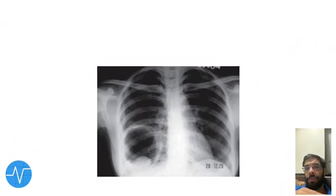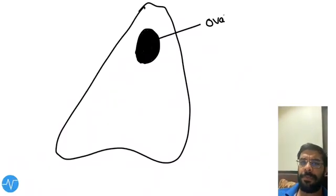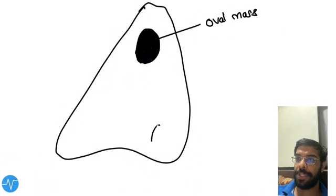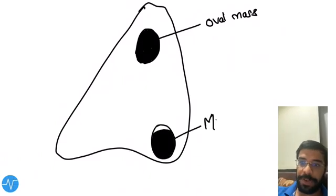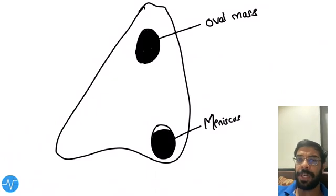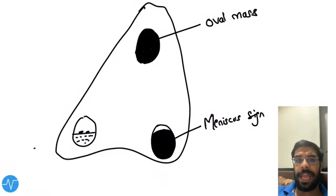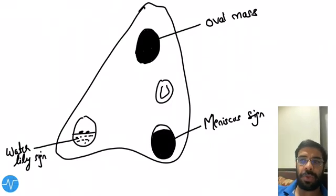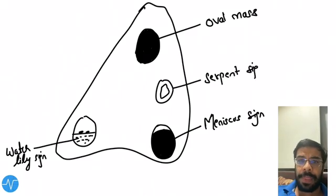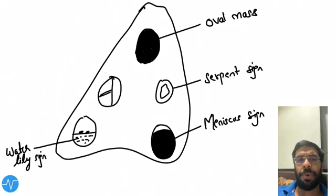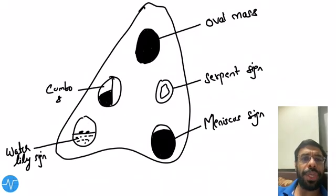In summary: unruptured hydatid cyst is homogeneous, oval, well-defined with no calcification. For ruptured cysts: Minister sign when pericyst ruptures; Water Lily or Camelot sign with air-fluid level and a bump from collapsed inner membrane; Serpent sign when the membrane is crumpled; and Cumbo or Onion Peel sign when multiple layers have ruptured.